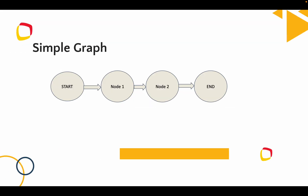In a LangGraph we will have a start node and an end node. In between we will have multiple nodes — here we have node one and node two. These nodes are connected using edges. From the start node it connects via an edge to node one, from node one it goes to node two, and then it ends. From start to end it will keep and share the state among these nodes — node two will get the state from node one.